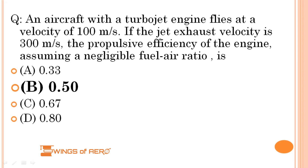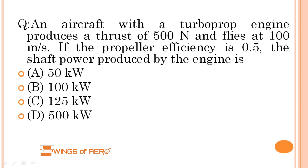So the correct answer is option B, that is 0.5. Next question: an aircraft with a turboprop engine produces a thrust of 500 N and flies at 100 m/s. If the propeller efficiency is 0.5, the shaft power produced by the engine is: (A) 550 kW, (B) 100 kW, (C) 125 kW, or (D) 500 kW.